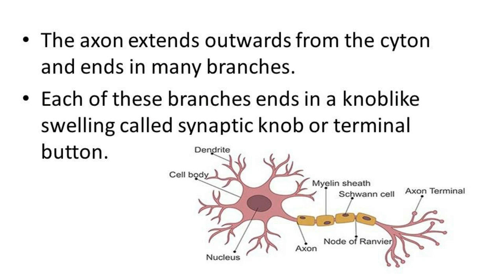Each of these branches ends in a knob-like swelling called the synaptic knob, or axon terminal.